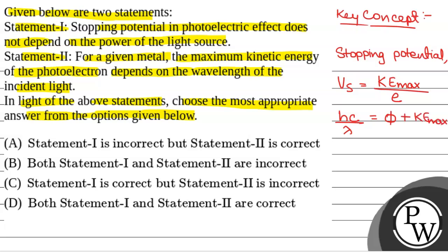Here hc/λ is the energy incident, λ is the wavelength of incident energy, and φ is the work function of the metal. From here, KE_max = hc/λ − φ. So Vs, the stopping potential, equals (hc/λ − φ) / E.